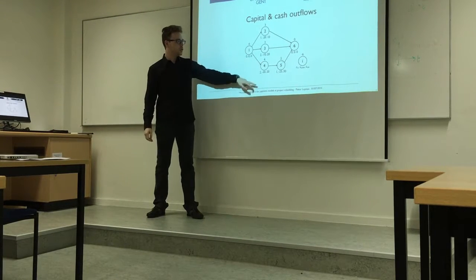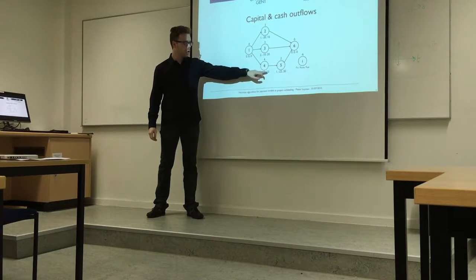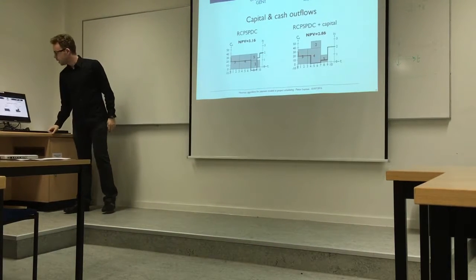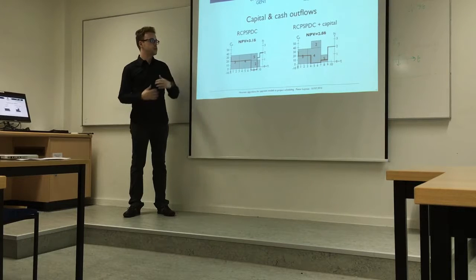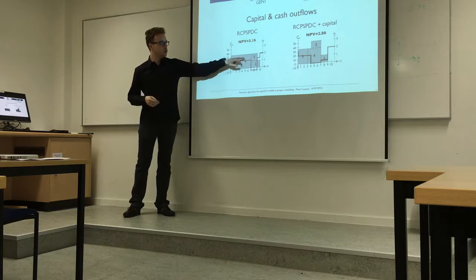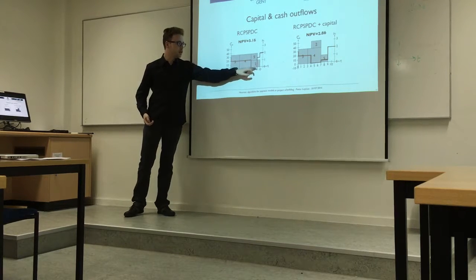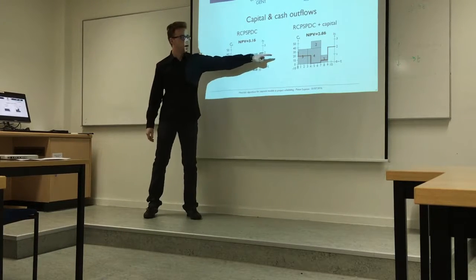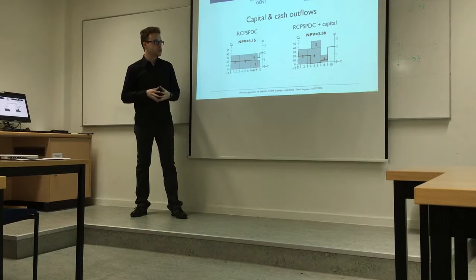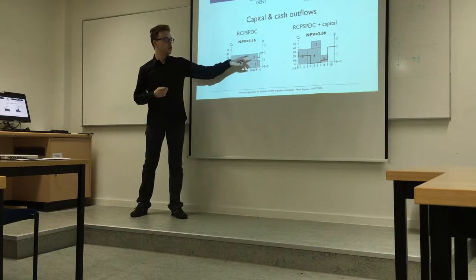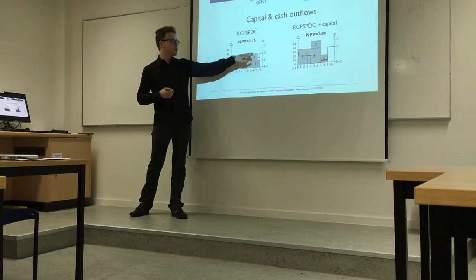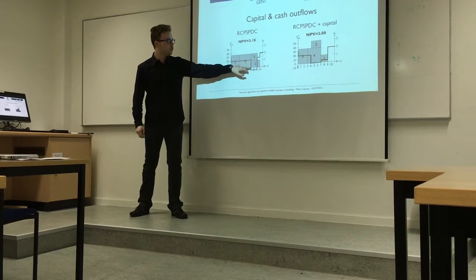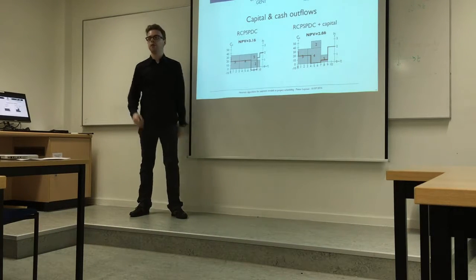To illustrate with a simple example: given durations, renewable resource demands, and cash outflows and inflows per activity, the left-hand side shows the optimal RCPSP schedule ignoring capital. The bold line marking capital actually goes negative at certain time units. On the right-hand side, the capital-feasible optimal schedule is shown, where activity 2 is advanced so that sufficient capital is available to start activity 5.